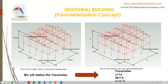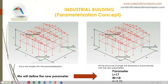Now that we have defined the parameters on the left, we can randomly change them to the parameters shown on the right. We will change to a length, width, and height of 17, 18, and 9.76 feet respectively.